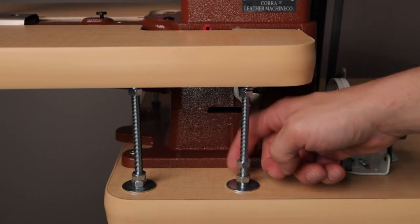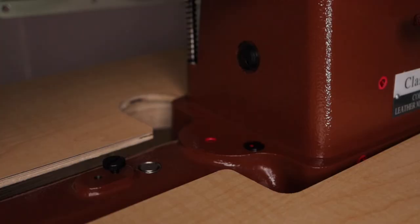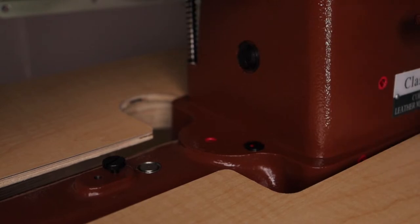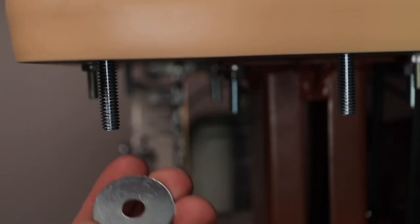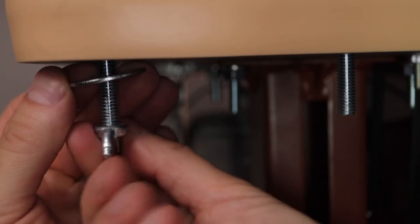You can adjust the height of the platform with the two adjusting nuts, so you want the work platform flush and level with the base of the sewing machine. Once set, lock the work platform in place with a large washer and wing nut to complete the installation.